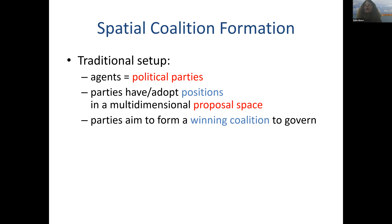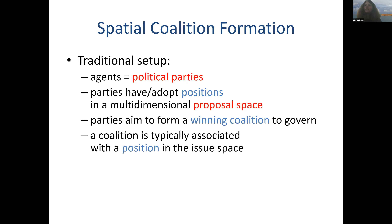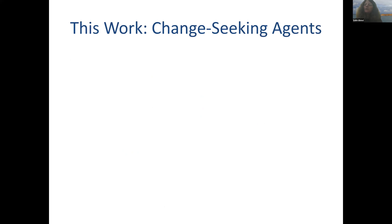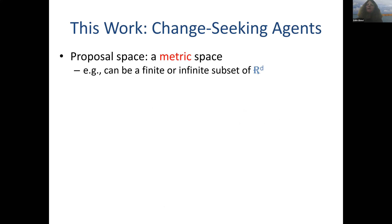These parties with their positions aim to form a winning coalition to govern. A winning coalition means a position they should collectively adopt. For a coalition to be winning, it has to contain the majority of the parties. There's a very significant literature on this model going back almost 100 years, with some recent surveys. The literature that typically studies it is non-computational, sometimes theoretical, sometimes data-driven, but typically political science literature. In this paper, we treat this model by assuming that we have a status quo and agents seeking to implement a change from it.